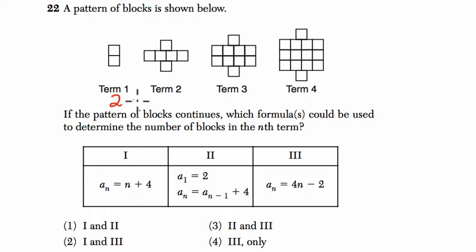In term one, we have two blocks, then we have six blocks, and ten blocks, and fourteen blocks. I notice every time we're adding four. So my first thought is, the slope's got to be something with four.